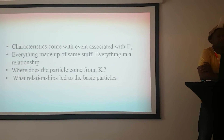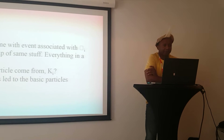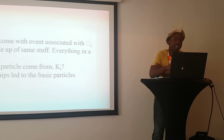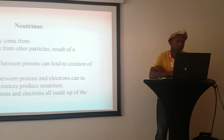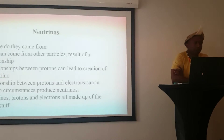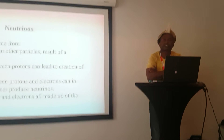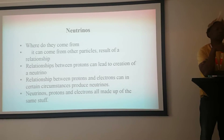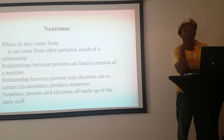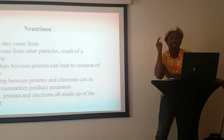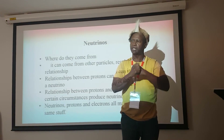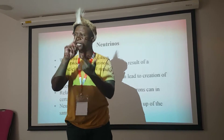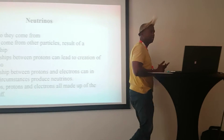Characteristics of something come with an event associated with Pi. Everything is made up of the same stuff and everything is in a relationship. Where does particle KI come from? What relationships led to the basic particles? Neutrinos can come from other particles — it's a result of relationships. A relationship between protons can lead to creation of one neutrino. Relationships between protons and electrons can in certain circumstances produce neutrinos. Therefore neutrinos, protons, and electrons are made up of all the same stuff.